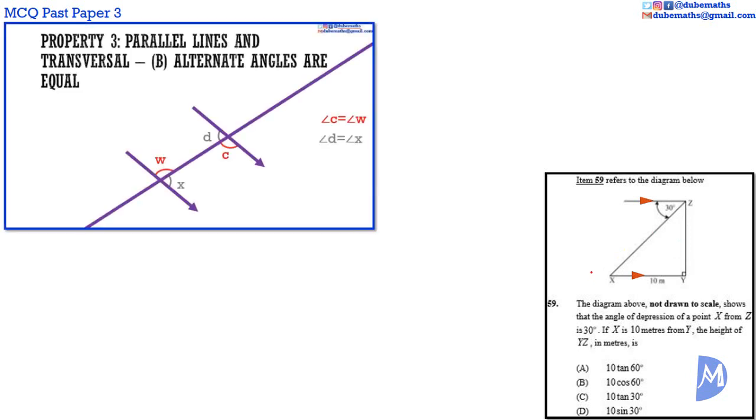Question 59. These two lines are horizontal and thus parallel. When two parallel lines are cut by a transversal, alternate angles are equal. Therefore, this angle is also equal to 30 degrees.